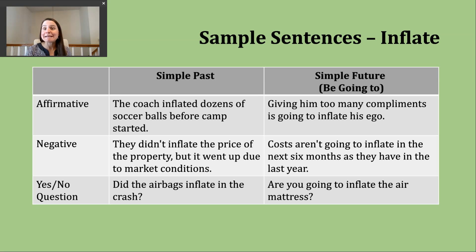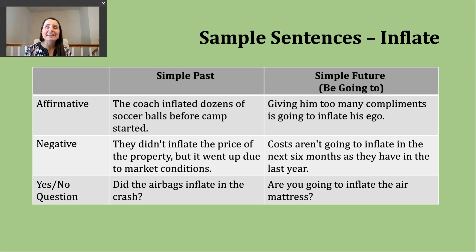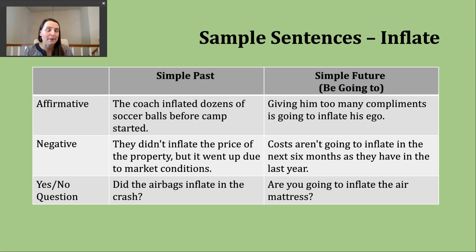For a yes or no question in the simple future, start with the form of be that matches the subject, then the subject, then going to and the base verb. Example: are you going to inflate the air mattress? This might be asking about someone's plans — air mattresses are common for guests or camping, and you store them deflated, then inflate them when needed.